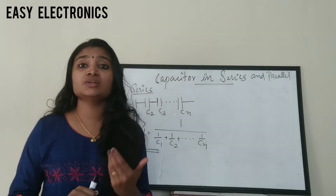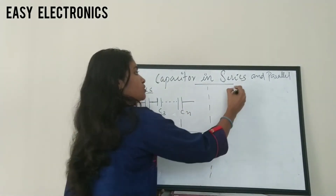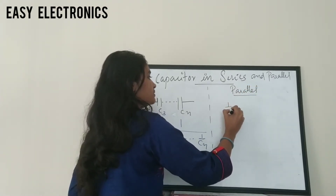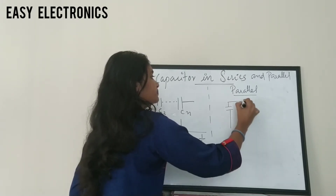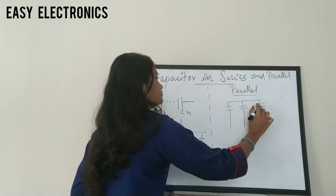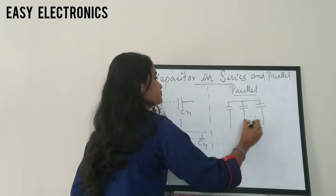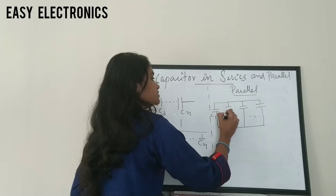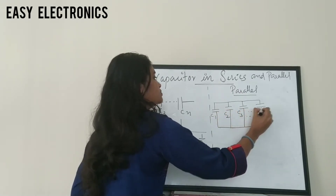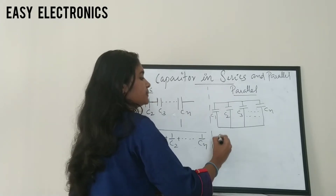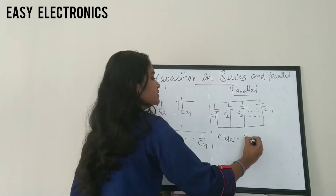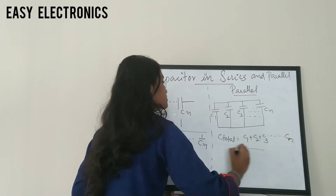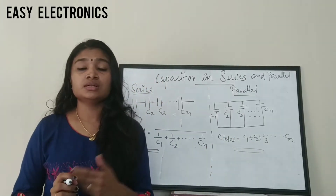For the parallel case, capacitors C1, C2, C3 up to Cn are connected in parallel. The total capacitance is: C_total = C1 + C2 + C3 + ... + Cn. This is the total capacitance when the capacitors are connected in parallel.